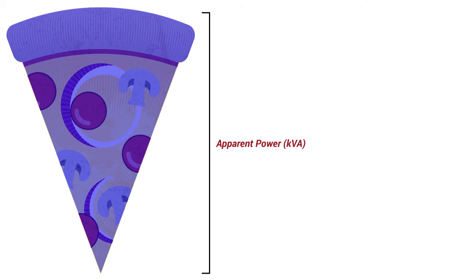The entire slice, toppings and crust, can be consumed. Just like a mission critical facility consumes real and reactive power. The slice is representative of apparent power, which is the total amount of power consumed by a facility.